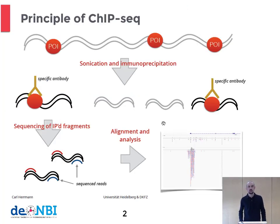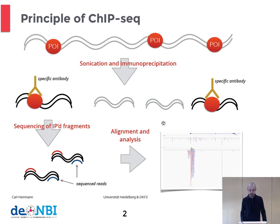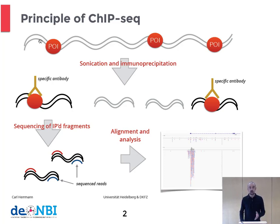Usually we have a protein of interest and we would like to determine the binding sites of this protein on the DNA, or we have a specific histone modification which we would like to track on the genome sequence. The protein of interest is indicated here by these red dots, and the first step is to do a sonication after covalent cross-linking, through which the DNA gets fragmented into little fragments of 300 to 500 base pairs.